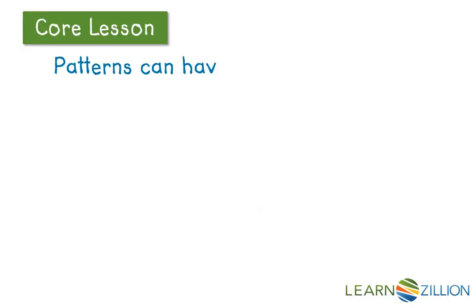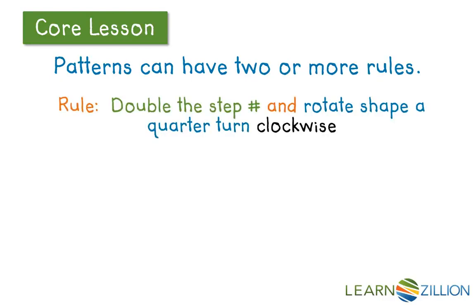Patterns can have two or more rules. Let's take the rule: double the step number and rotate a shape a quarter turn clockwise. In step 1, I double the number, becomes 2, and we just start with our arrow pointing to the right.